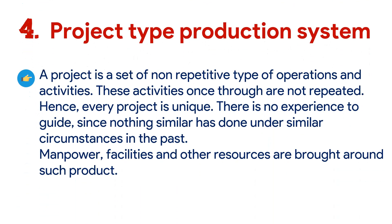The next production system is the project type production system. A project is a set of non-repetitive operations and activities that are not repeated. Hence, every project is unique. There is no experience to guide since nothing similar has been done under similar circumstances in the past. Manpower, facilities, and other resources are brought together around such products.